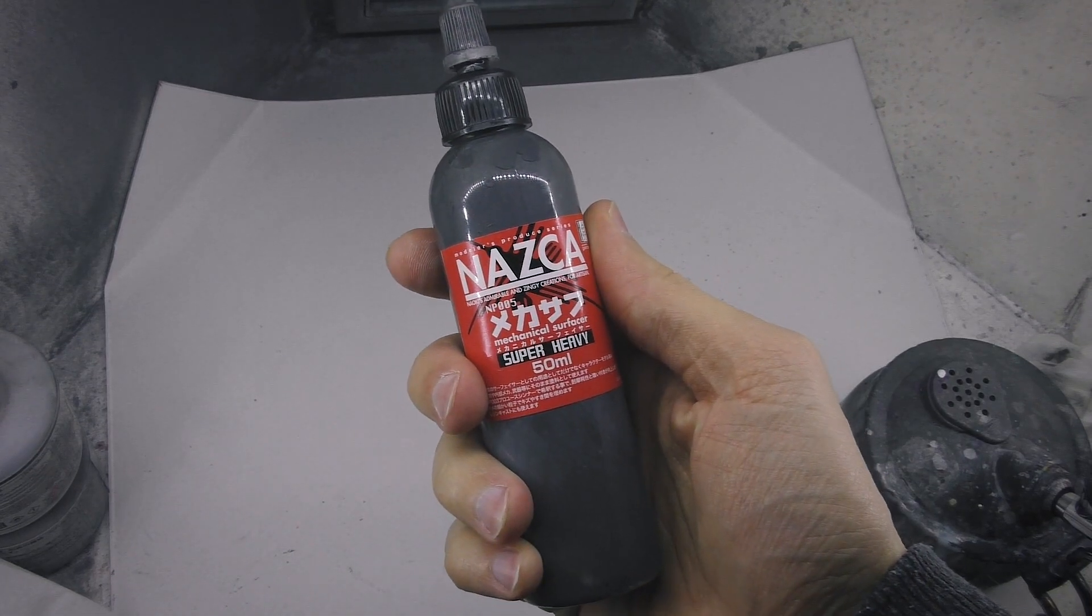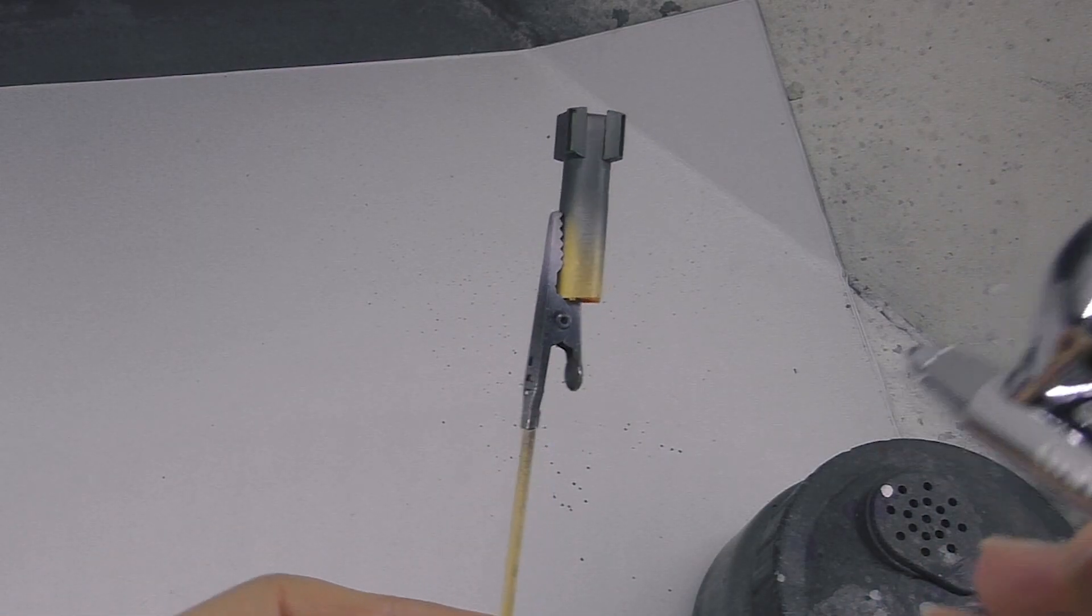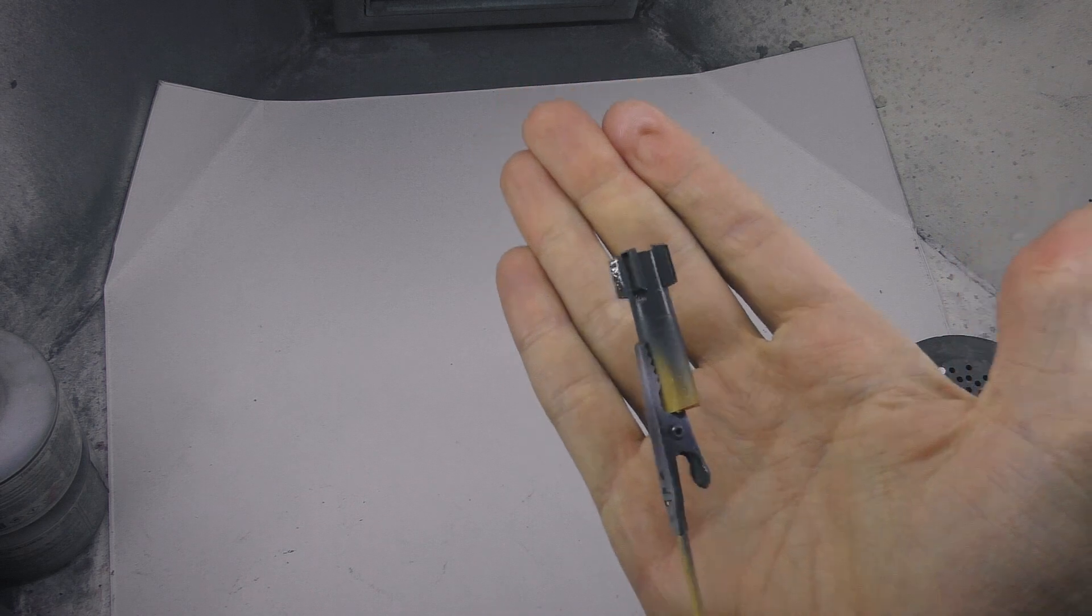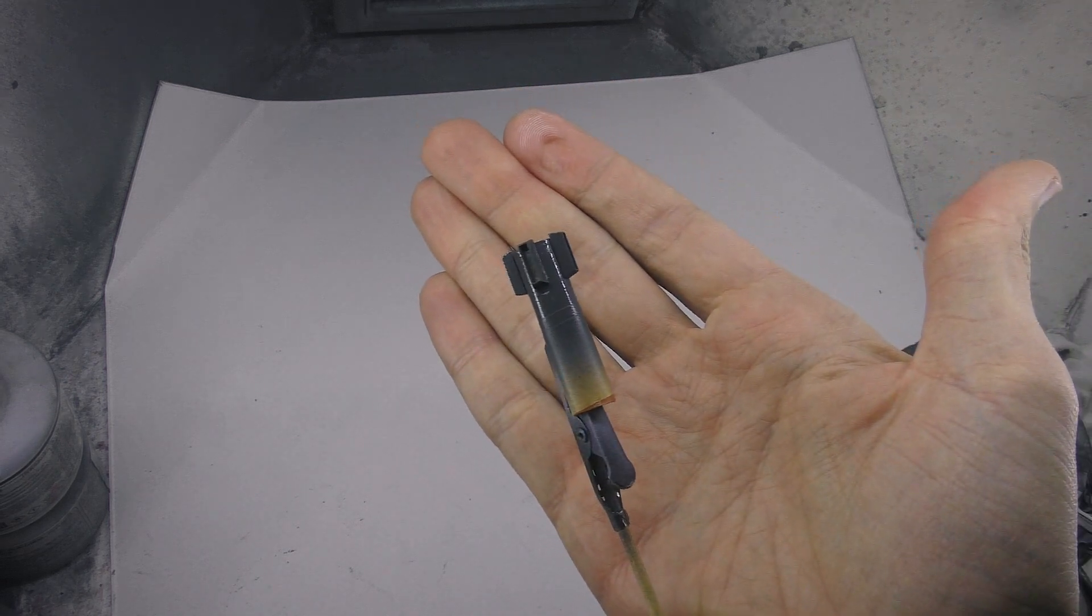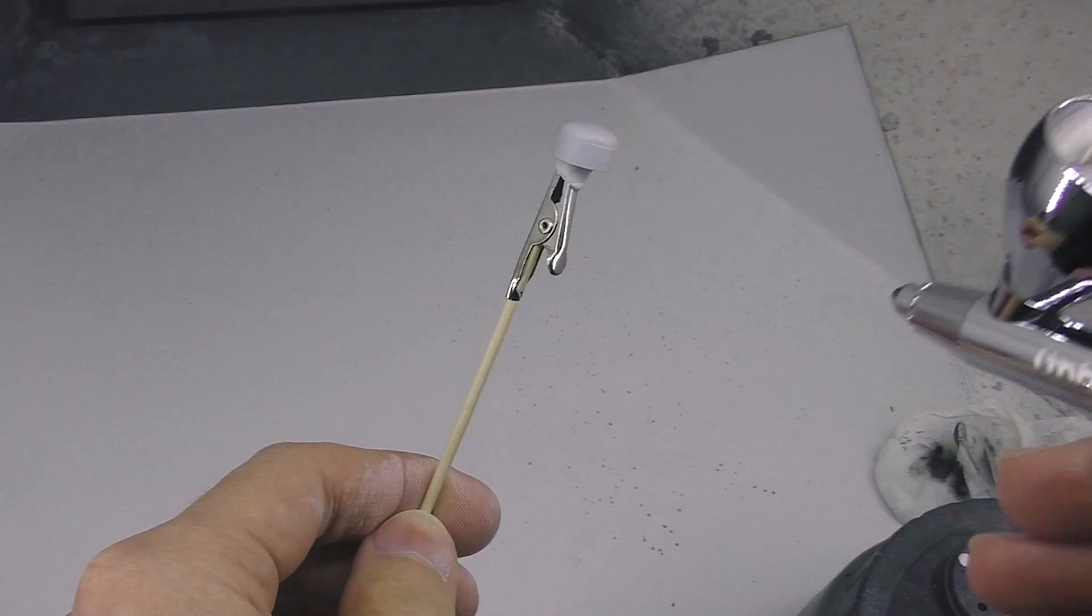And complete the duct nozzle parts with this beautiful Nazca surfacer, which I use here as an ordinary paint. This is Gaia X White, first color for the main piece.